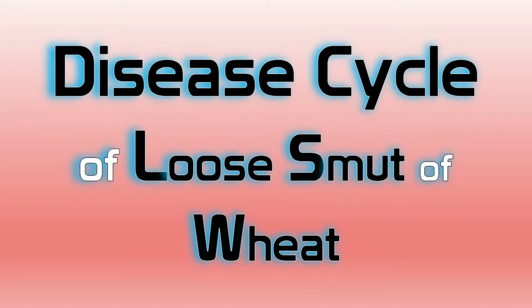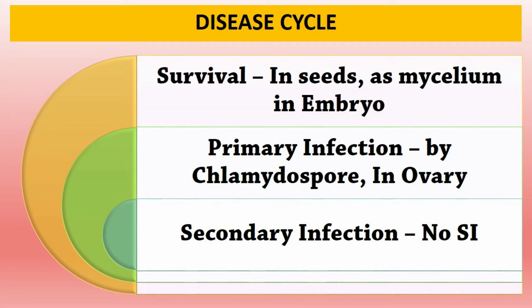Disease cycle of loose smut has three important points: survival — pathogen survives off-season as mycelium in the embryo of seed; primary infection — occurs by chlamydospores at flowering stage; secondary infection — absent in loose smut.